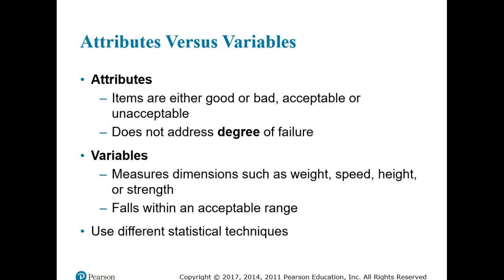Quality characteristics may be measured as either attributes or variables. Attribute inspection classifies items as either good or defective — for example, a light bulb either burns or it doesn't. Variable inspection measures dimensions such as weight, speed, size, or strength to see if an item falls within an acceptable range — for example, using a micrometer to verify electrical wire is 0.01 inches in diameter. Knowing whether attributes or variables are being inspected helps decide which statistical control approach to take.